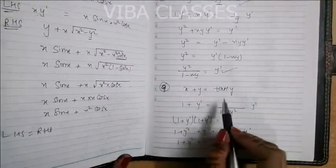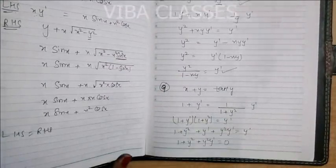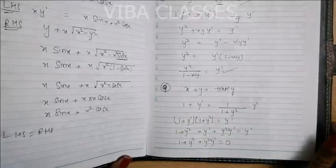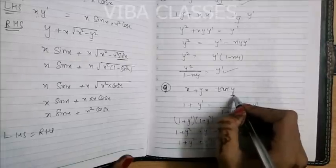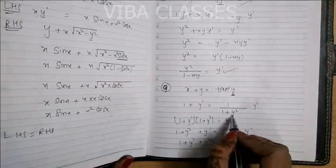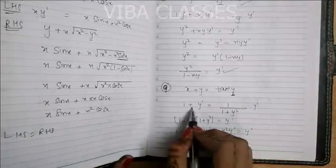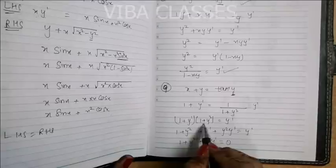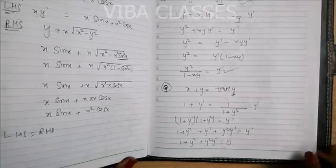Question number 9: x + y = tan⁻¹(y). Taking the derivative: 1 + y' = 1/(1+y²) × y'. Cross-multiplying by (1+y²): (1+y²)(1 + y') = y'. Expanding and rearranging with y' terms, cancel out y' where appropriate. You get your differential equation.